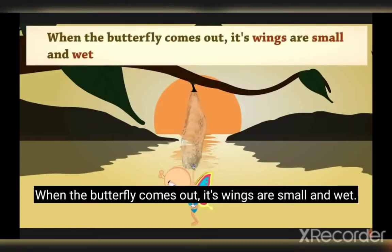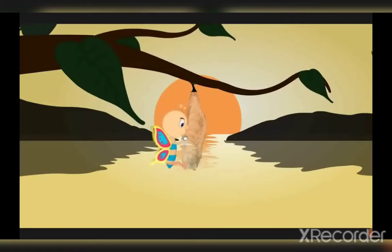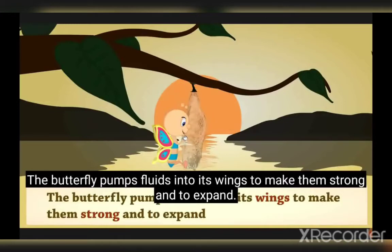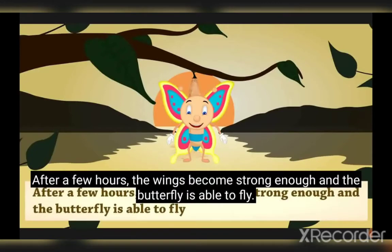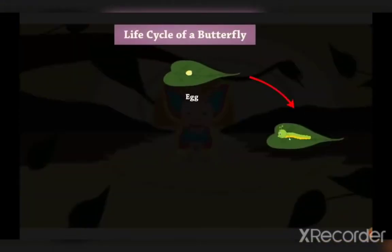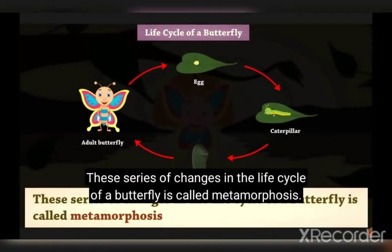When the butterfly comes out, its wings are small and wet. The butterfly pumps fluids into its wings to make them strong and to expand. After a few hours, the wings become strong enough and the butterfly is able to fly. These series of changes in the life cycle of a butterfly is called metamorphosis.